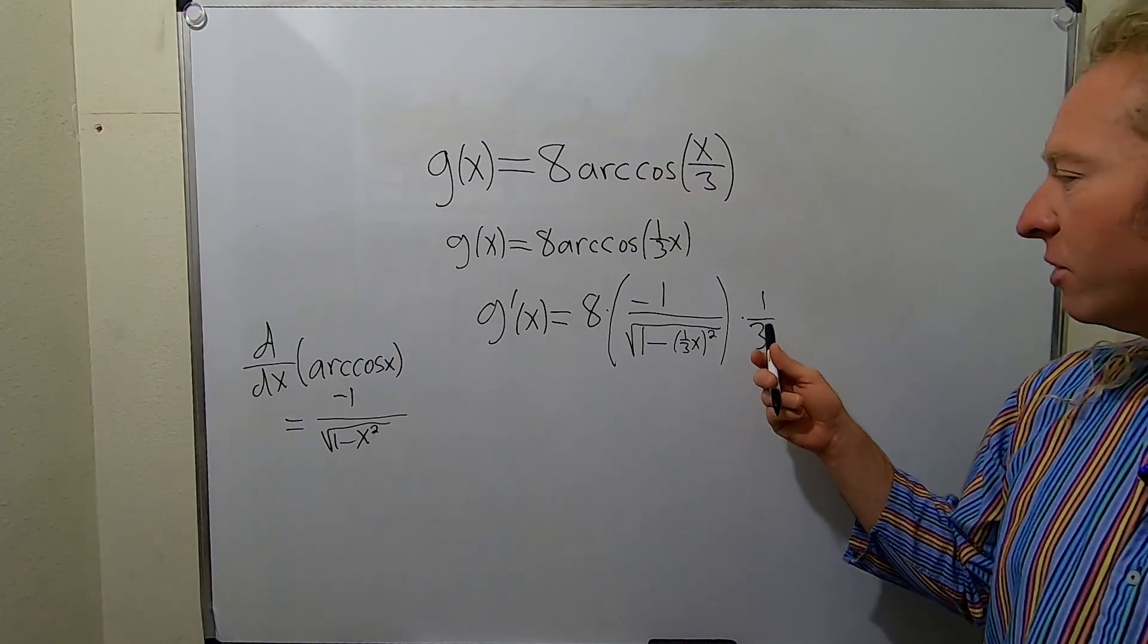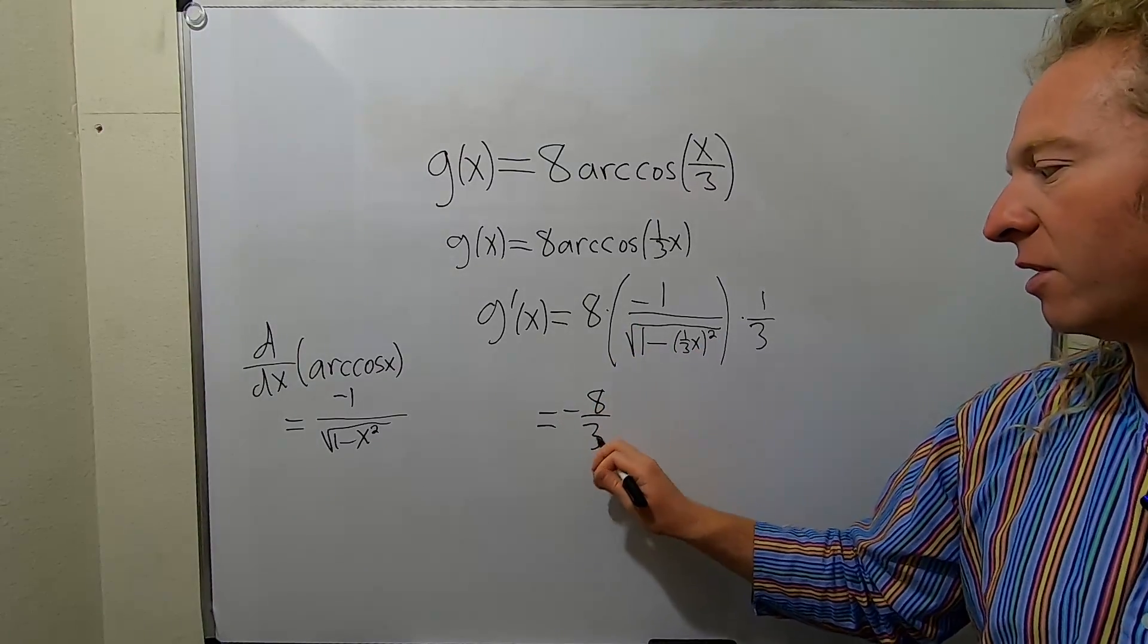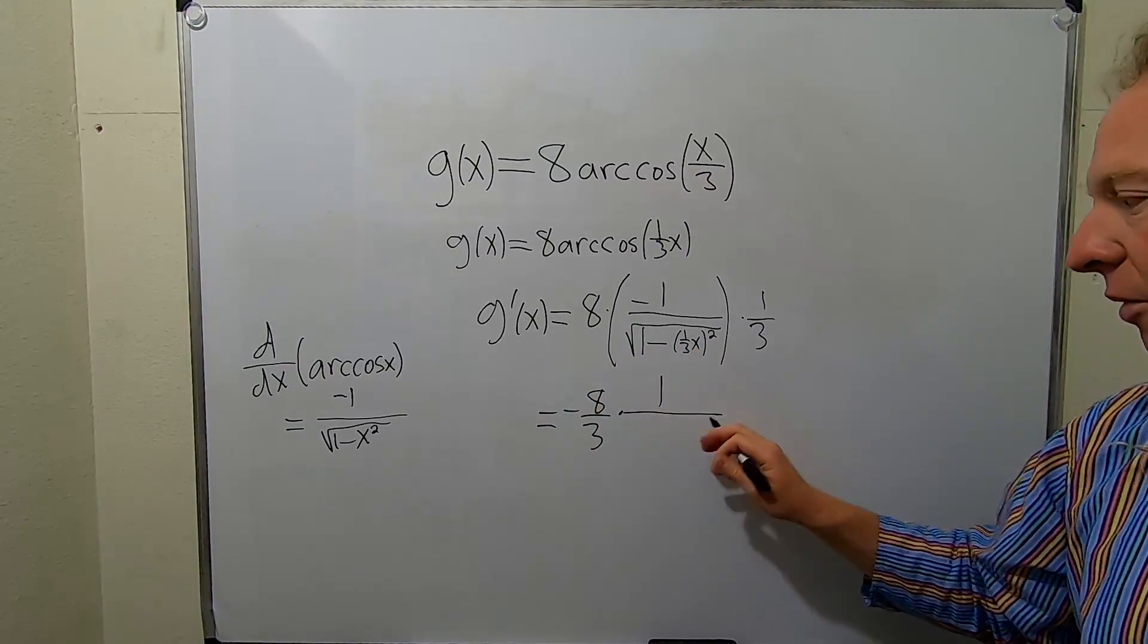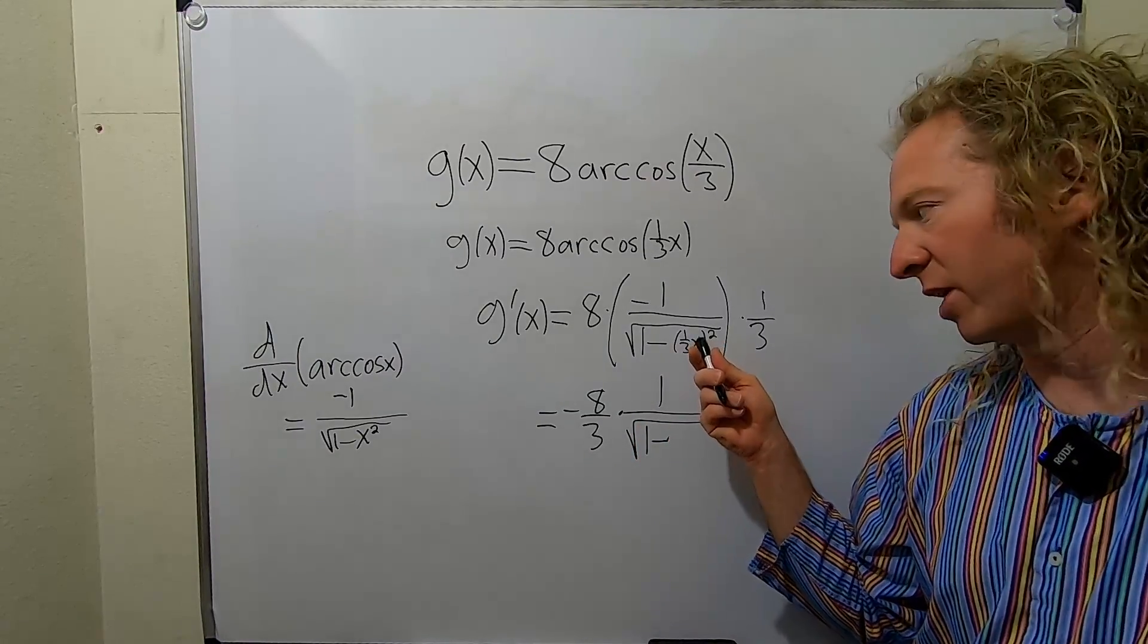The last thing maybe to do is multiply the 1 third and the 8 and pull out the negative. So this is negative 8 thirds times 1 over the square root of 1 minus... Let's go ahead and multiply this out as well.